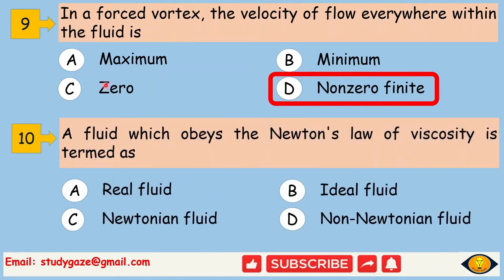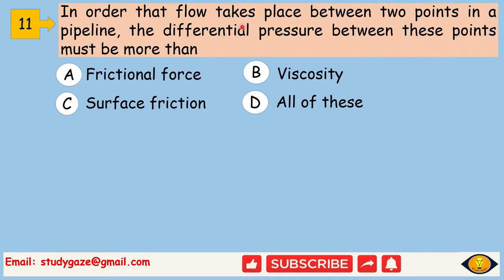A fluid which obeys Newton's law of viscosity is termed as Newtonian fluid. In order that flow takes place between two points in a pipeline, the differential pressure between these points must be more than all of these.